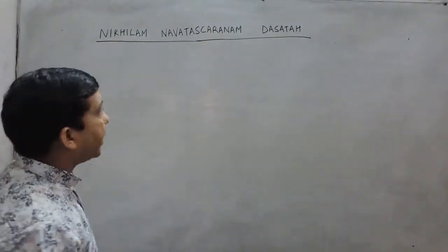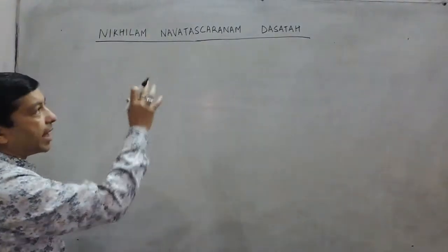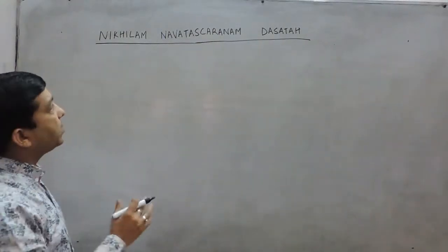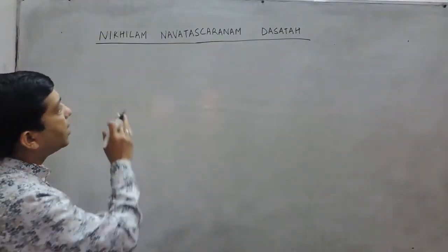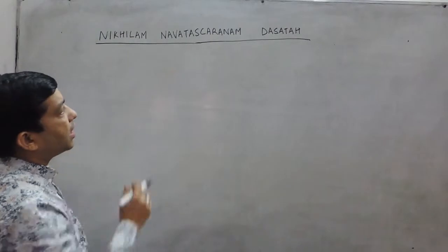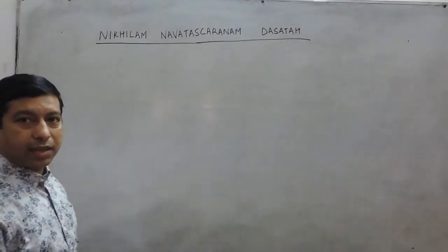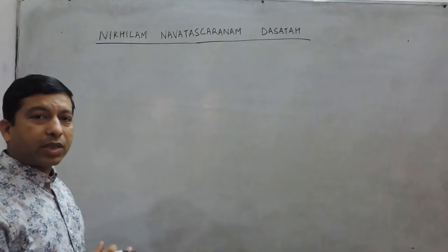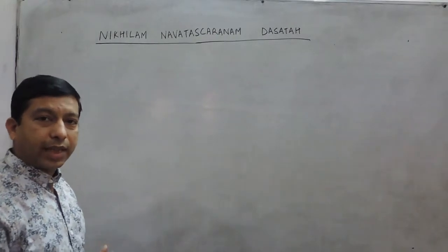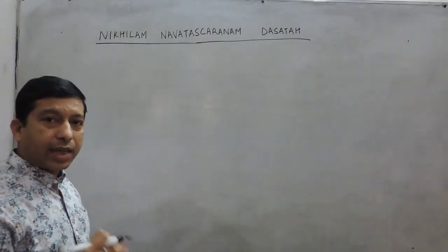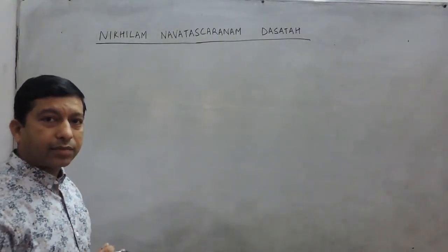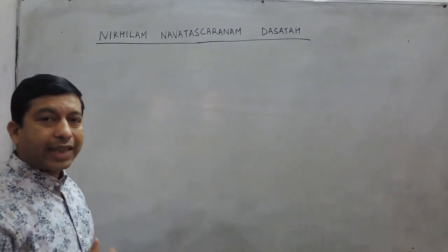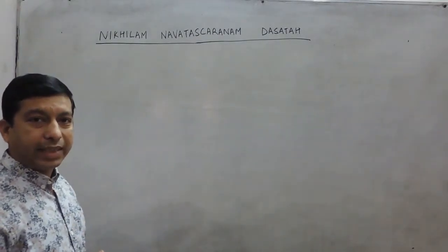Hello, today I will tell you how to multiply two numbers using the Vedic mathematics rule Nikhilam Navtasakaram Dasatam. It means if there are two numbers which are near to 10, or near to 100, or near to 1000, they can be multiplied very easily.